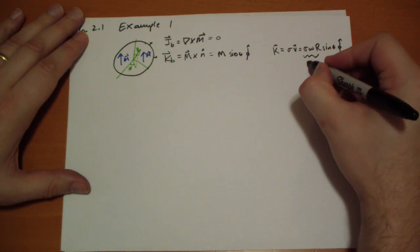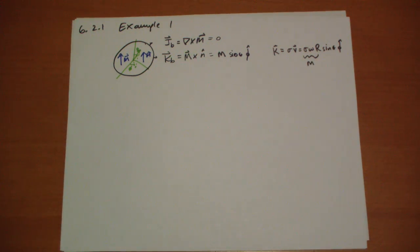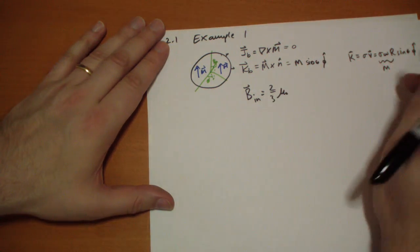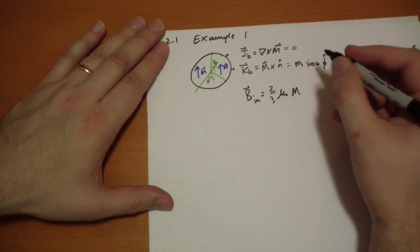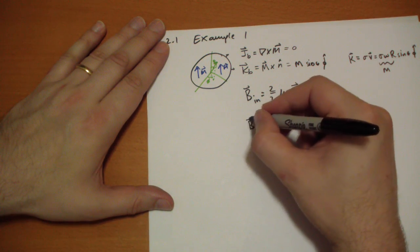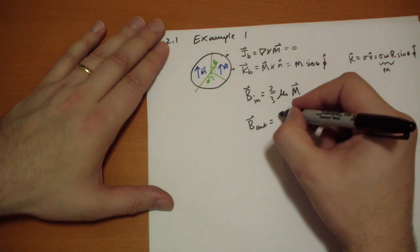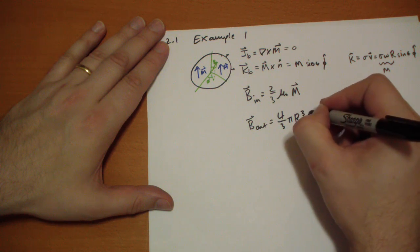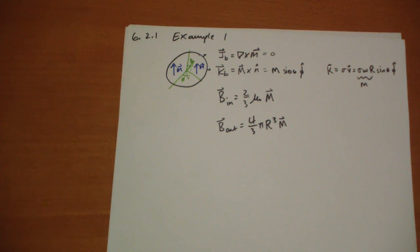If you take this to be the magnetization, then you have the identical case that we've already solved. We found that the magnetic field inside is going to be equal to two-thirds mu-naught times M-vector. Notice that inside the magnetic field is uniform — it points exactly parallel with the magnetization.